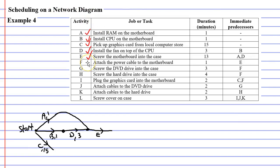Moving on to Activity F — we need to attach the power cable to the motherboard, and you can't do that until Activity E is complete. You need to screw the motherboard into the case before you attach the power cable. So we complete Activity E with a vertex, and then Activity F follows on from that. Activity E had a duration of 13 minutes, so E, 13. Activity F was only 1 minute, so F, 1.